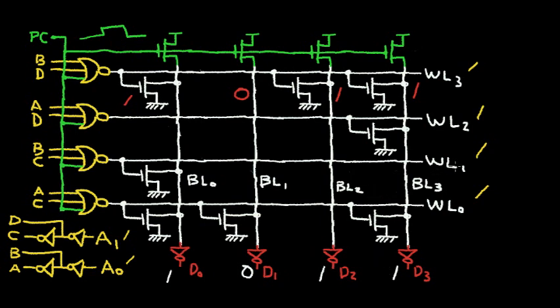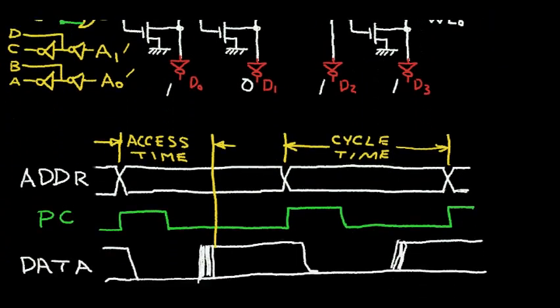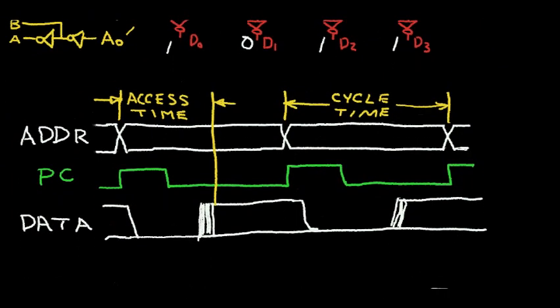So let's consider the ROM timing. This is very similar to the RAM timing that we presented in an earlier video. At the top here, I've shown my address waveform, and below that the pre-charge pulse. So whenever the address changes, I generate a pre-charge pulse. And that charges all the bit lines up to 1 and disables my decoder. So since all the bit lines are at 1, the data output is at a 0 level on all four data out bits.